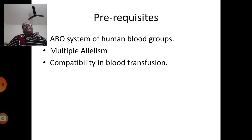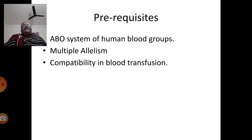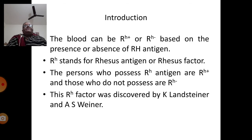The prerequisites before beginning this session are that you should have a fair knowledge of multiple alleles and inheritance of ABO blood groups in humans, which has been taught in the previous session, that is Session 5. You can always go back to your LMS Carnatica and open Session 5 to know more about multiple alleles and compatibility in blood transfusion.